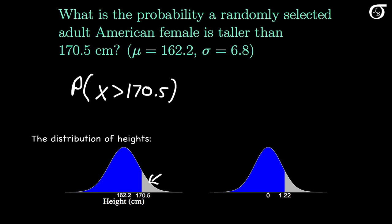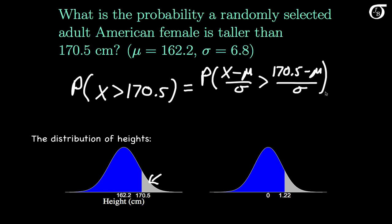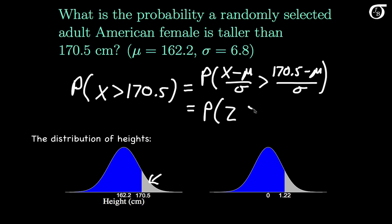It can help us find this area if we first standardize. We want the probability that X takes on a value bigger than 170.5. I'm going to subtract the mean and divide by the standard deviation on both sides, giving the probability that (X minus mu) over sigma is bigger than (170.5 minus mu) over sigma. You might recognize the left-hand quantity as Z — we've standardized our random variable, so this quantity has the standard normal distribution. Substituting mu equals 162.2 and sigma equals 6.8 gives us the probability that Z is greater than (170.5 minus 162.2) divided by 6.8.